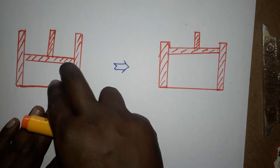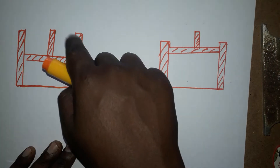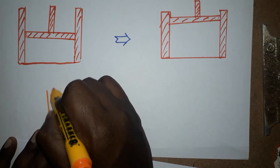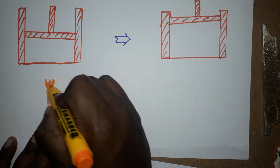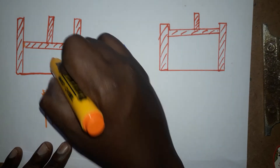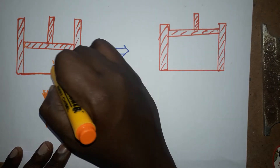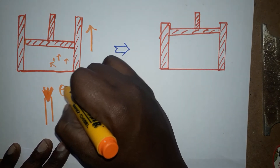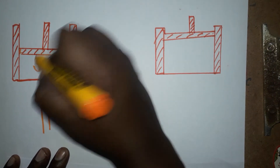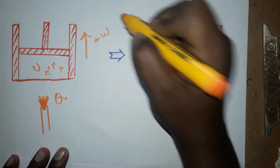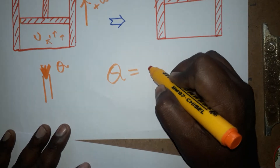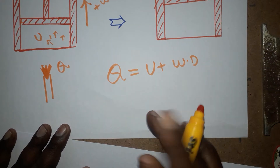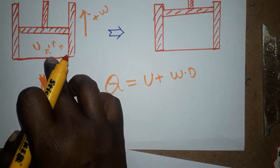Consider a system with a non-conducting wall and a frictionless piston. When we give heat energy to this system, the heat energy goes into molecular vibration (internal energy) and also causes the piston to move up. So the given heat energy Q converts into two things: internal energy and work done. This is what thermodynamic first law tells us: Q equals internal energy plus work done.